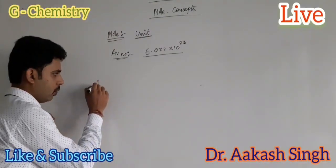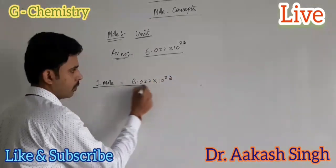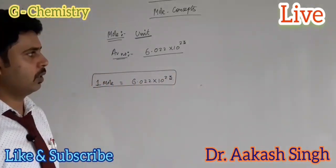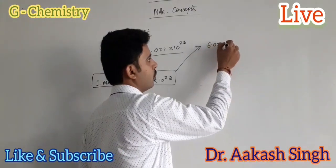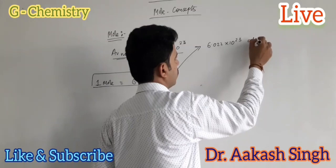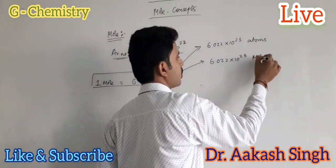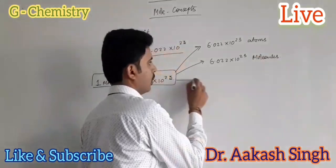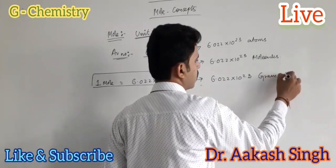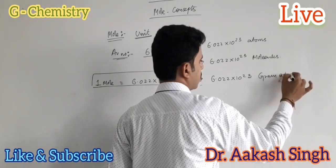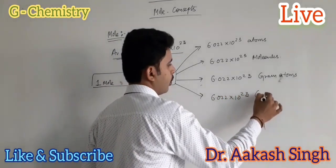1 mole is equal to 6.022 into 10 to the power 23 atoms, 6.022 into 10 to the power 23 molecules, 6.022 into 10 to the power 23 gram atoms, and 6.022 into 10 to the power 23 gram molecules.